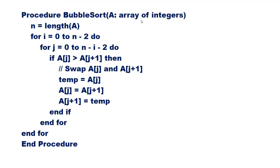Now the pseudocode: a equals array of integers. n equals length of a. For i equal to 0 to n minus 2, do. For j equal to 0 to n minus i minus 1, do. If a[j] greater than a[j+1], then perform the swapping operation: temp = a[j], a[j] = a[j+1], a[j+1] = temp. End if. End inner for. End outer for. End procedure.